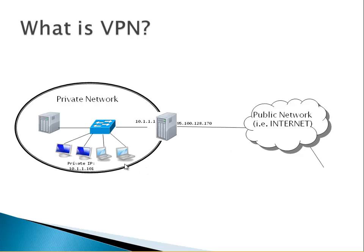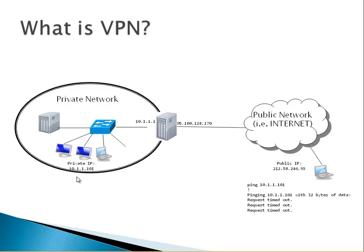What about VPN? We have the same setup: a private network and a public network. When a client laptop is connected to the internal network, it can communicate with all internal machines, access shares, and remote desktop to any computer without a problem. But when the user takes the laptop to a cafe, they won't be able to access any internal machines, because this is a private network — hidden from the outside. The private network's IP addresses aren't visible externally, and pinging any internal PC from the cafe will not be successful.